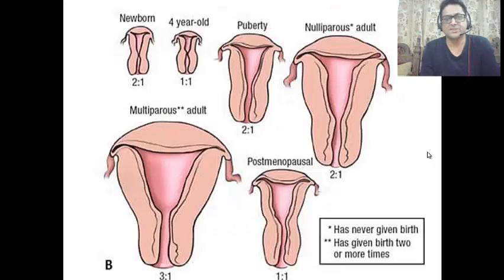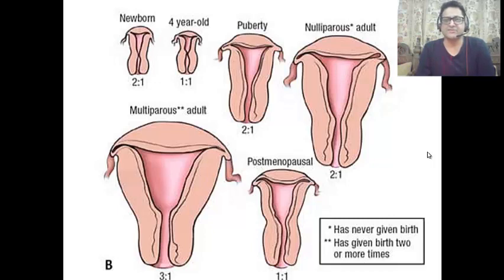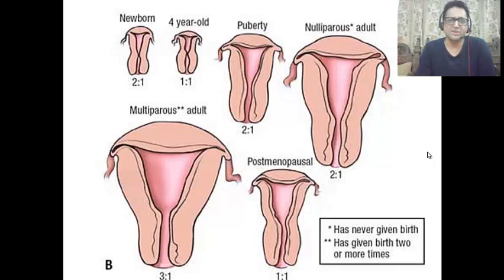Age changes in the uterus: In the newborn, the cervix is larger and the cervix-to-body ratio is 2:1. At 4 years, the ratio becomes 1:1. At puberty, the ratio returns to 2:1, with the body being twice the size of the cervix — this is also the nulliparous ratio, meaning the uterus of a woman who has never given birth. In the multiparous uterus (having given birth to many children), the body increases significantly to a 3:1 ratio. In postmenopausal old age, the uterus becomes atrophic and decreases in size. Thank you very much.